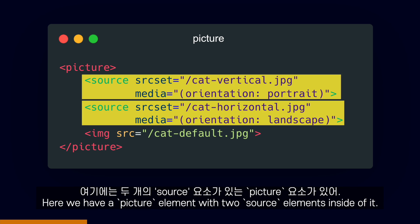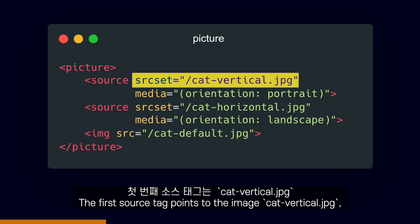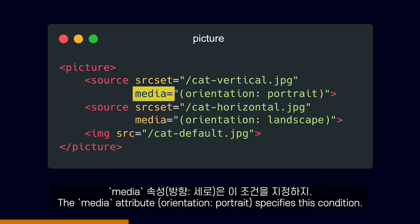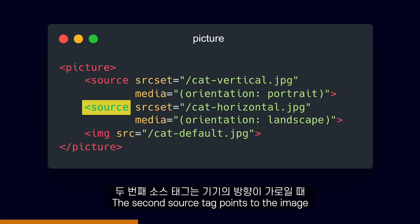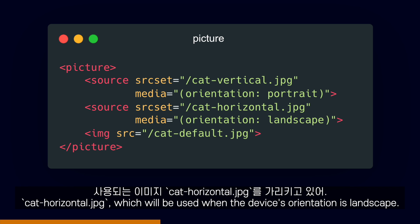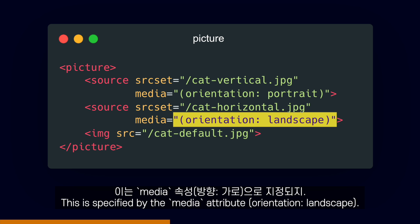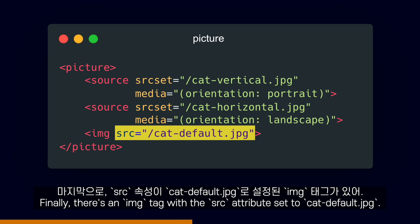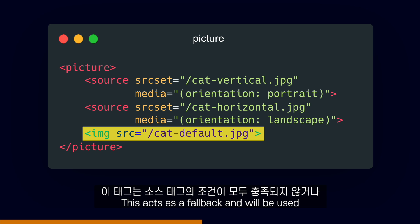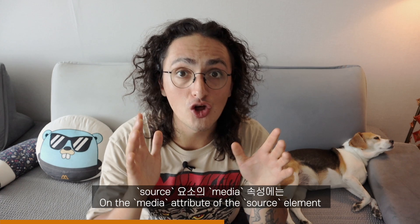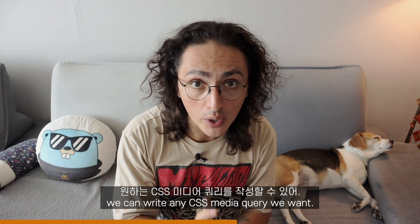Like in this example. Here we have a picture element with two source elements inside of it. The first source tag points to the image cat-vertical.jpg, which will be used when the device orientation is portrait — the media attribute orientation portrait specifies this condition. The second source tag points to the image cat-horizontal.jpg, which will be used when the device orientation is landscape. Finally, there is an image tag with the src attribute set to cat-default.jpg. This acts as a fallback and will be used if neither of the conditions of the source tags are met, or if the browser doesn't support the picture and source tags.